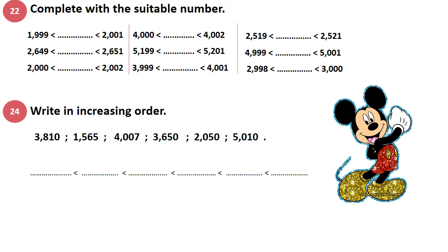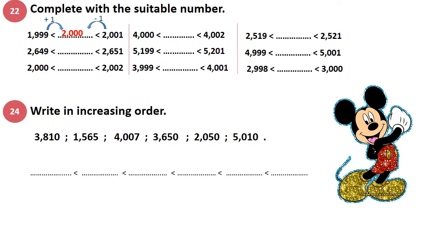Exercise 22: Complete with a suitable number. 1,999 and 2,001. I have to write the number that is between these two numbers. What is the number that comes after 1,999? I have to add 1. 9 plus 1 equals 10, which means I write 0. How many 9s do I have? 3. So I write 3 zeros, and the number that comes after 1000 is 2. So 2,000. If you don't know the number after 1,999, see the number before 2001 — subtract 1. 2001 minus 1 gives 2,000.